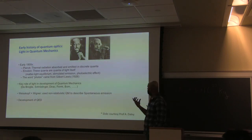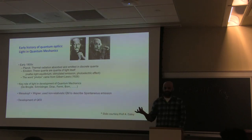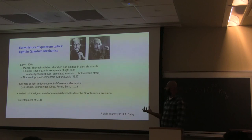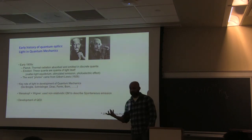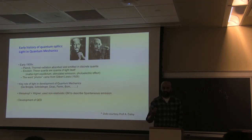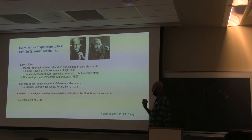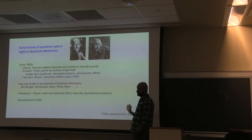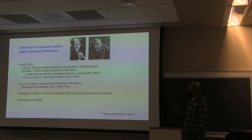For example, Planck, when he was trying to understand thermal radiation — the electromagnetic spectrum emitted by a black body — first came up with the idea that light must be emitted and absorbed in discrete quanta, which we now call photons.